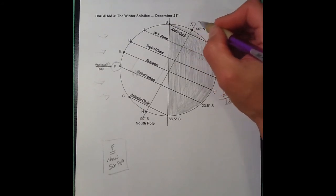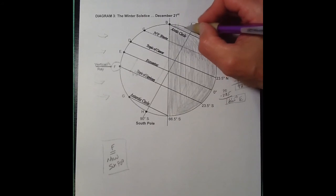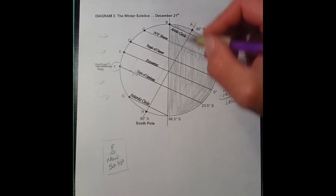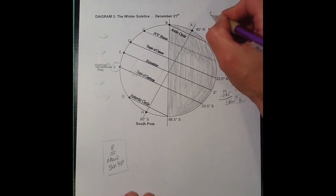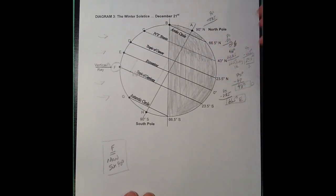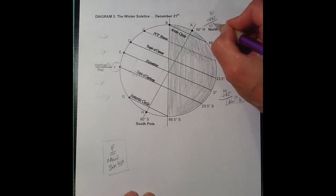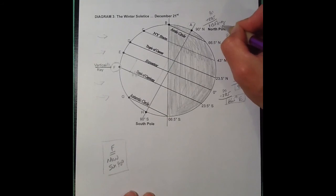A is 23.5 degrees into the darkness. The sun would not rise for another three months. On March 21st, you'd get sunrise at the North Pole. So, I do 90 degrees plus the 23.5. You're on opposite sides. I get 113.5 degrees away from the vertical ray.